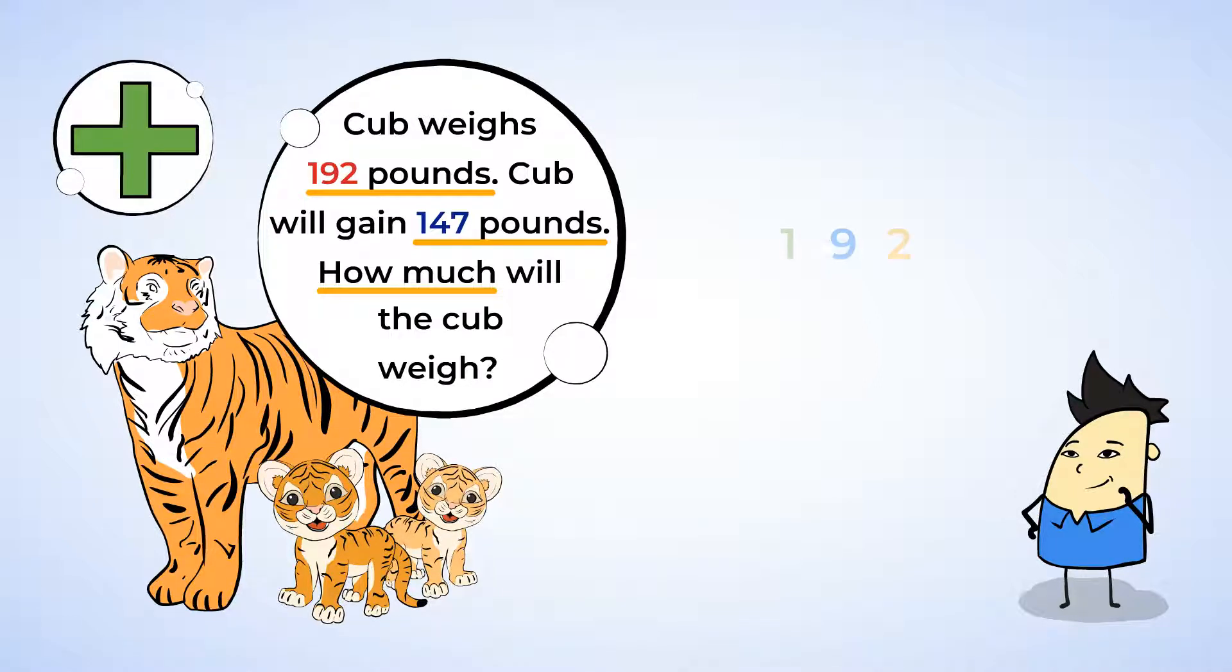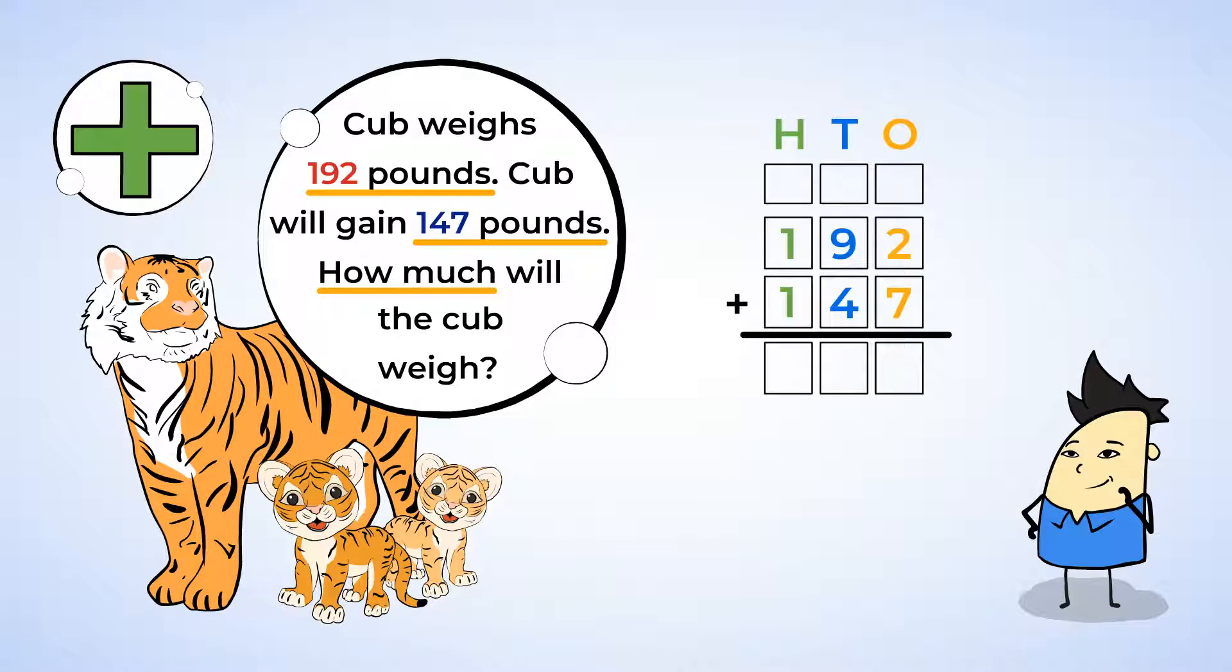Write the equation here. Now, the hundreds, tens, and ones places are each aligned. For example, the 9 and the 4 are aligned in the tens place.